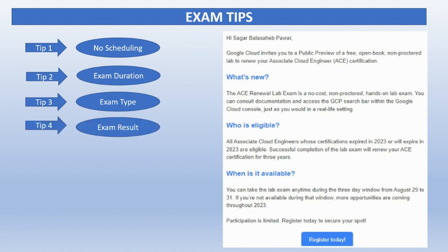Tip number four: exam result. When you give this exam, you will get your result in seven to eight working days. So you have to be patient — it's not like the result will flash in front of you once you complete the exam. Tip number five: certification validity. Once you pass this exam you will get three years of validity.